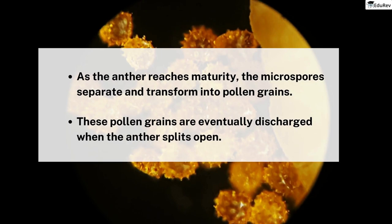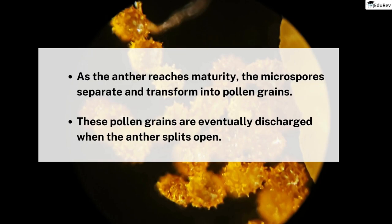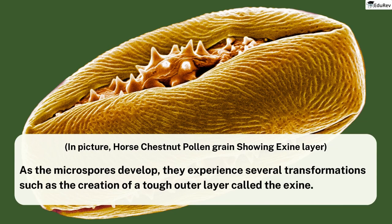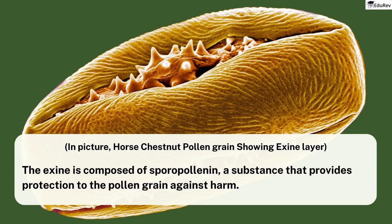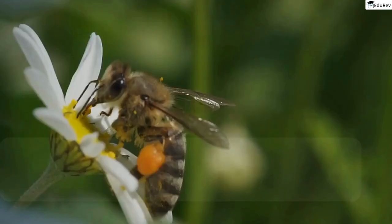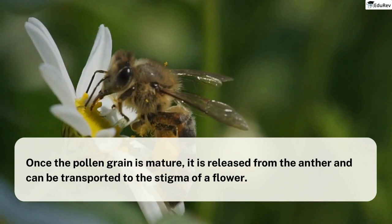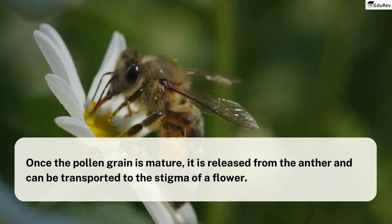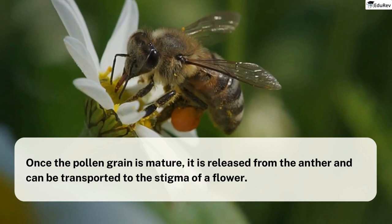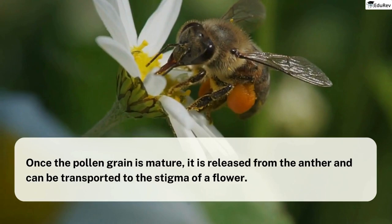A large number of pollen grains can be produced in each microsporangium. As the microspores develop, they experience several transformations, such as the creation of a tough outer layer called the exine. This exine is composed of sporopollenin, a substance that provides protection to the pollen grain against harm. Once the pollen grain is mature, it is released from the anther and can be transported to the stigma of a flower. So the next time you see a flower, take a moment to appreciate the complex processes taking place behind the scenes to produce the pollen grains that play a crucial role in plant reproduction.